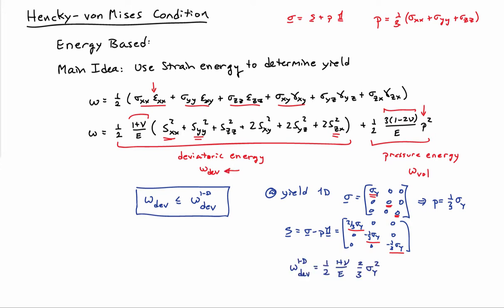If I go ahead and do that, I end up with one-half, one plus nu over E, two-thirds sigma_y squared. So that's my calibration constant. And now I can put that together with the general expression for the deviatoric strain energy, and you'll notice then the elastic constants actually drop out of the criteria. So I end up with this sum of squares of the components of the deviatoric stress tensor less than or equal two-thirds sigma_y squared. So this is a slightly easier version to apply of the Hencky-von Mises criteria, easier than, say, this full energetic expression.